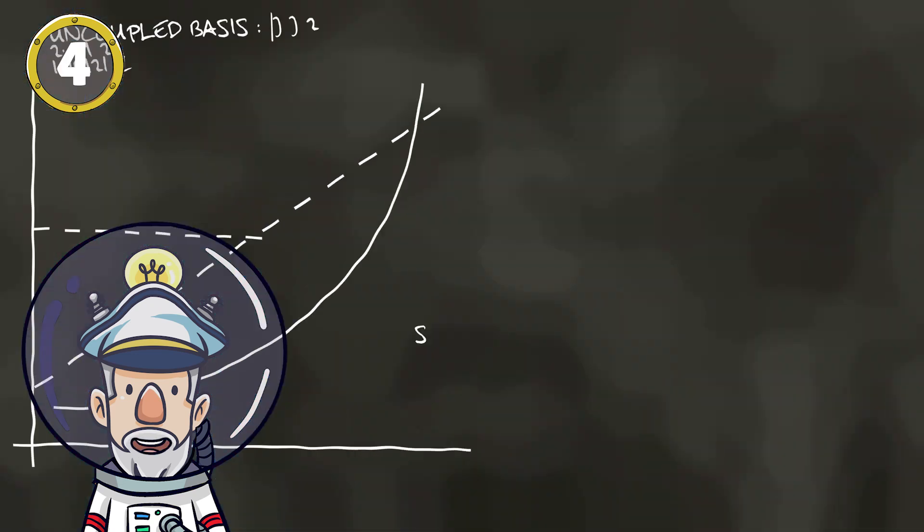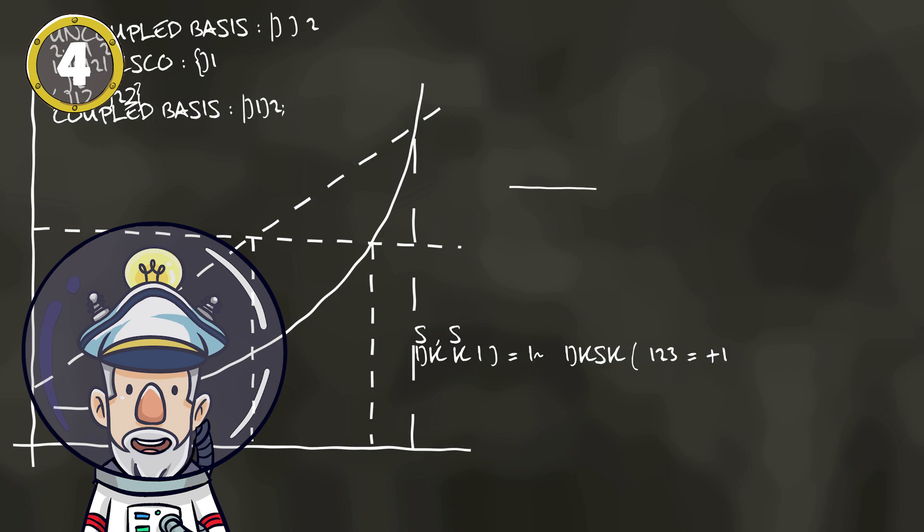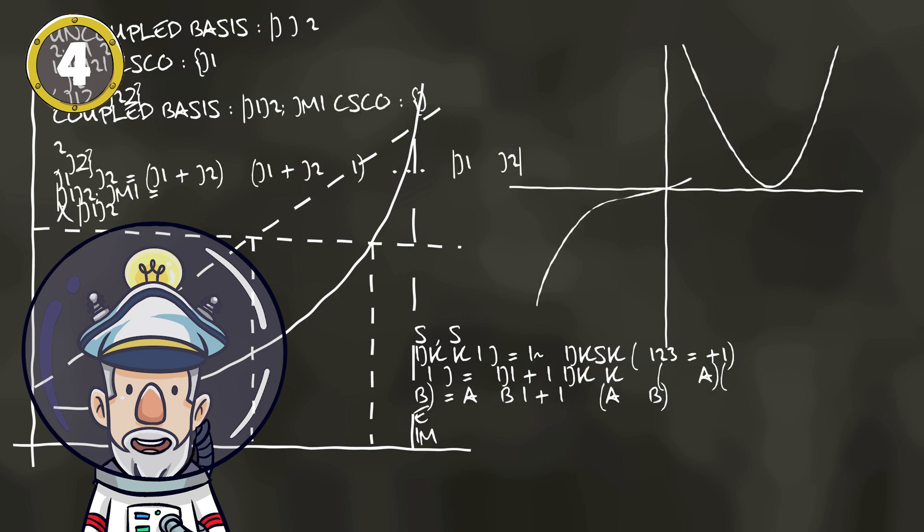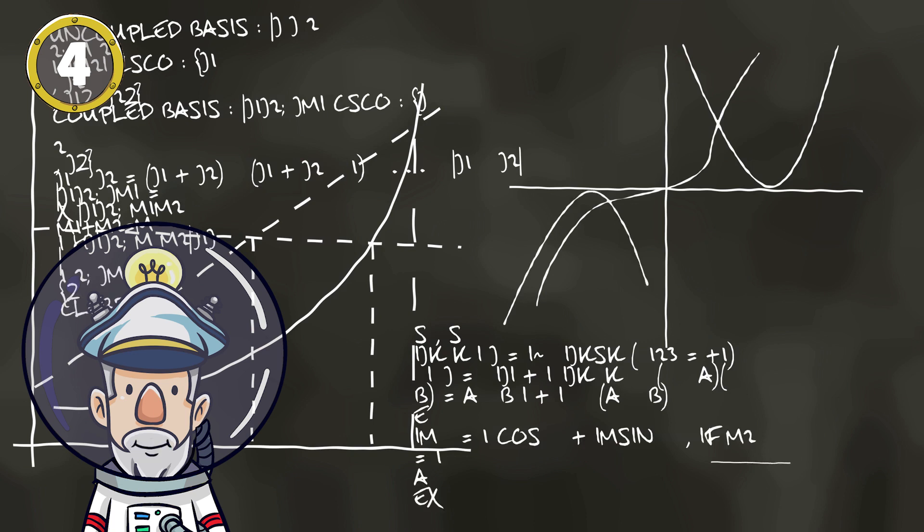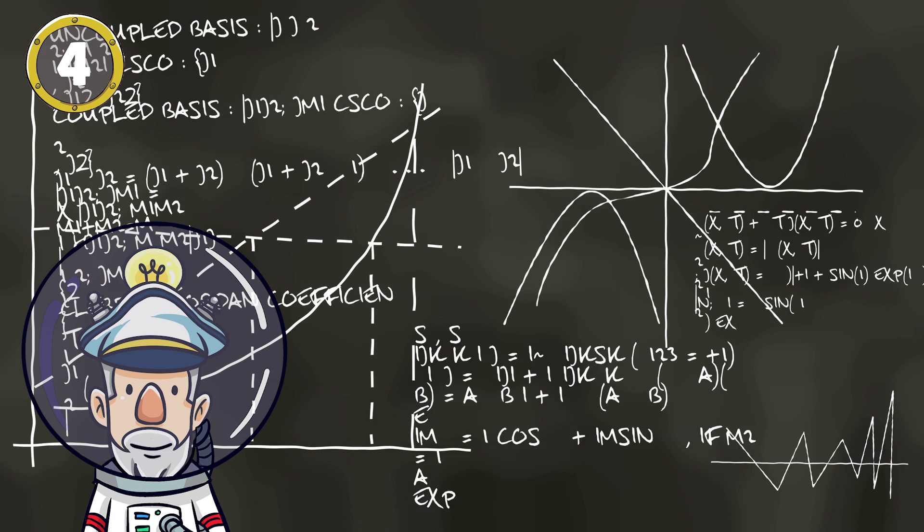Number 4: Albert Einstein first predicted the existence of black holes in 1916 with his general theory of relativity. The term black hole was coined many years later in 1967 by American astronomer John Wheeler.